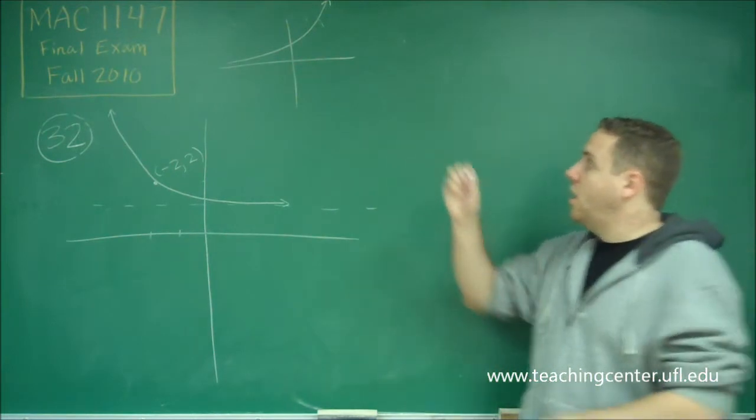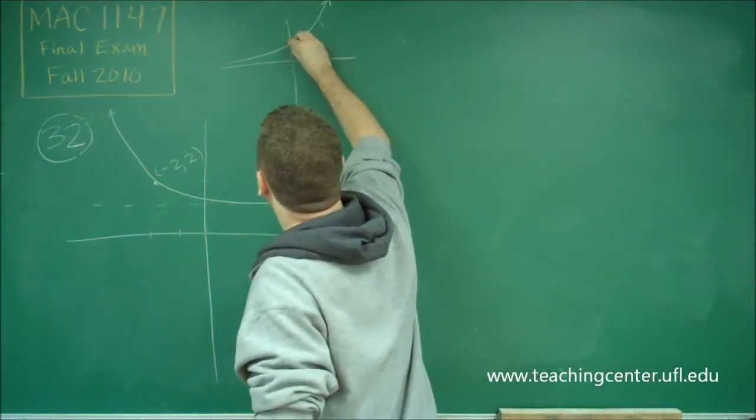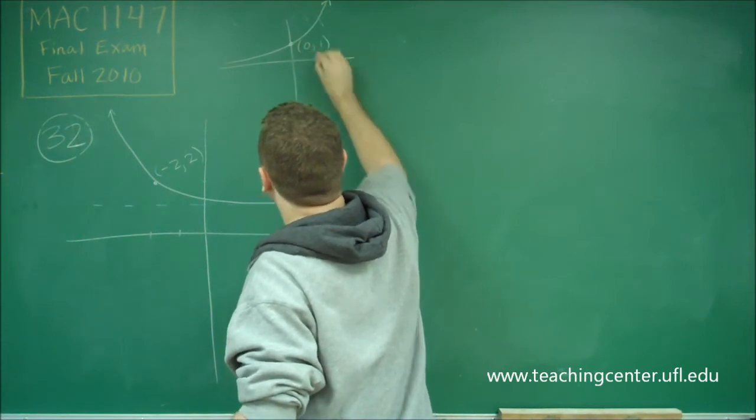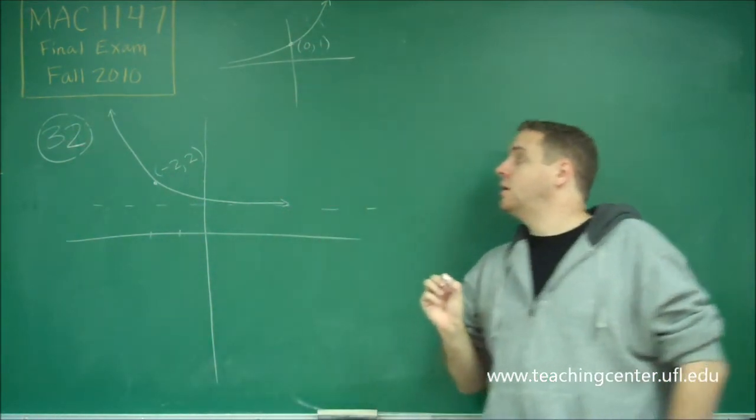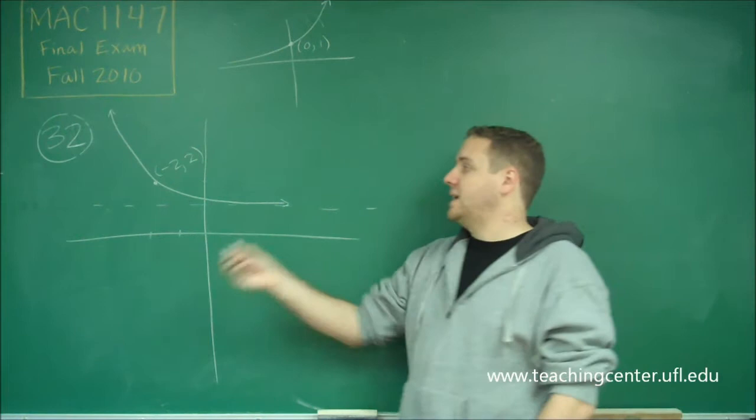Also, our normal point on our exponential graphs is 0, 1. Now, our point now is negative 2, 2.